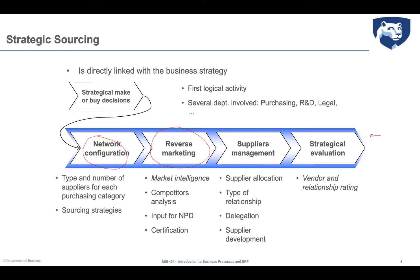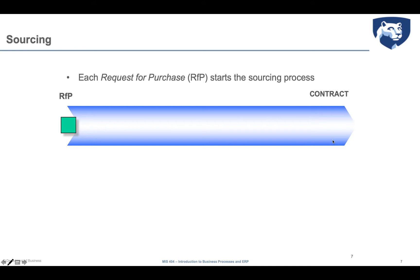The output of this is that for each category — so the goods and services I want to buy from external — I know exactly how my network is configured, which are the potential names to be included in the supply base, which relationship I want to put in place with them, and how to evaluate my suppliers. Once I know that, I can step to sourcing.